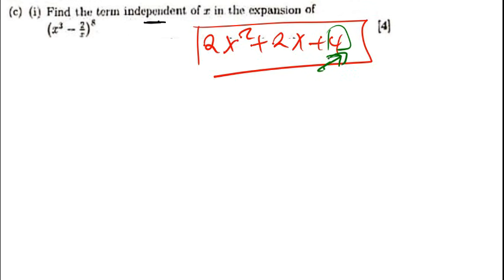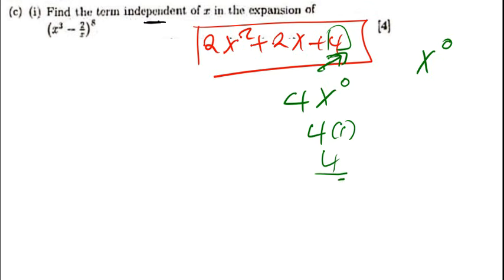So a term that doesn't have x — initially it has x, but that x is raised to the power 0. Because 4x to the power 0: any number to the power 0 is 1, so it's just 4. So a term independent of x is the term that has got x to the power 0. It's a term that doesn't have x because any number to the power 0 is 1.